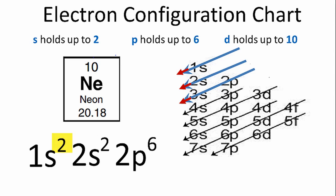If you add those numbers up, 2 plus 2 plus 6, you'll get 10, and that's how many electrons we have for neon. So the electron configuration for neon is 1s², 2s², 2p⁶. This is Dr. B, and thanks for watching.